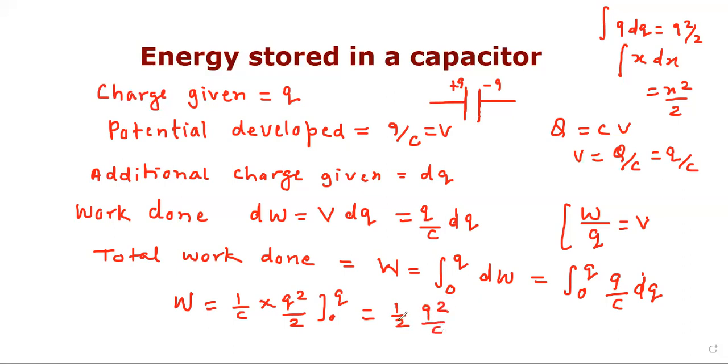This work done is stored in form of electrostatic energy in capacitor given by Ue. So Ue equal to w, that will be half q square upon c. We have q equal to cv, so we can replace q by cv. This will become half cv square, which is another form of energy stored in a capacitor.